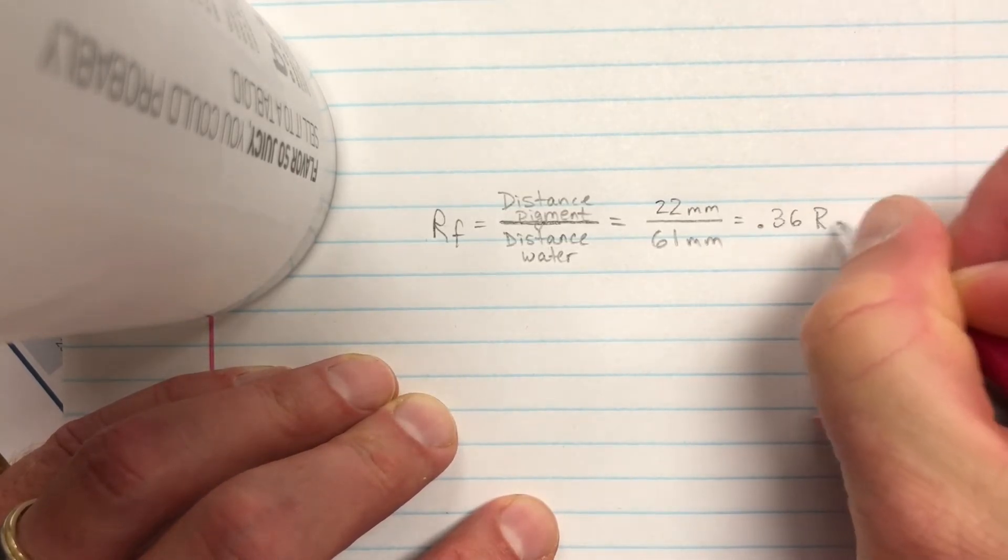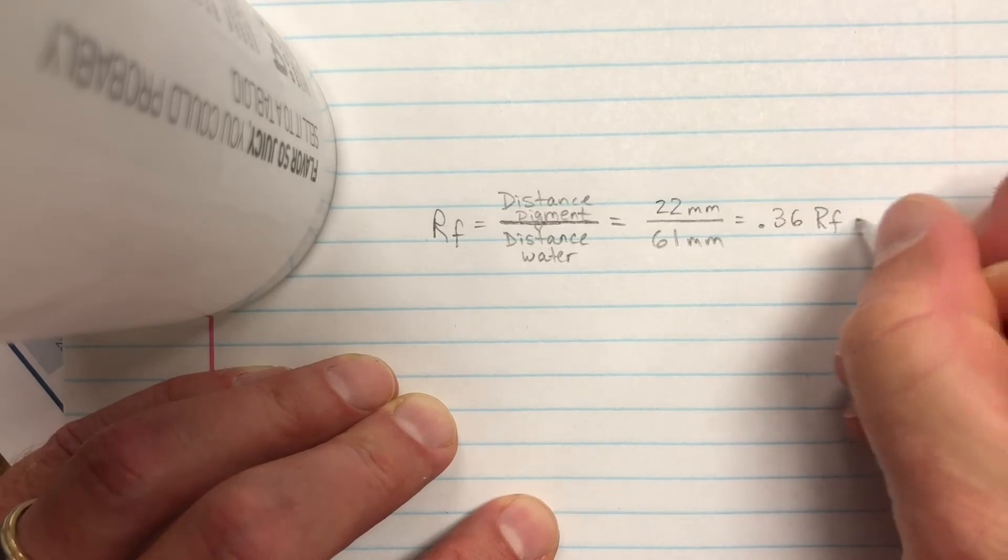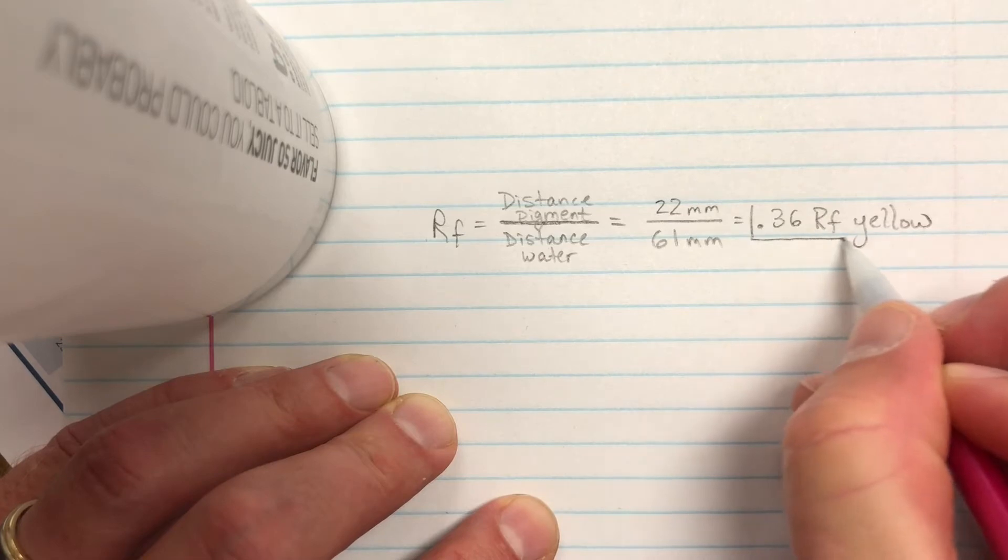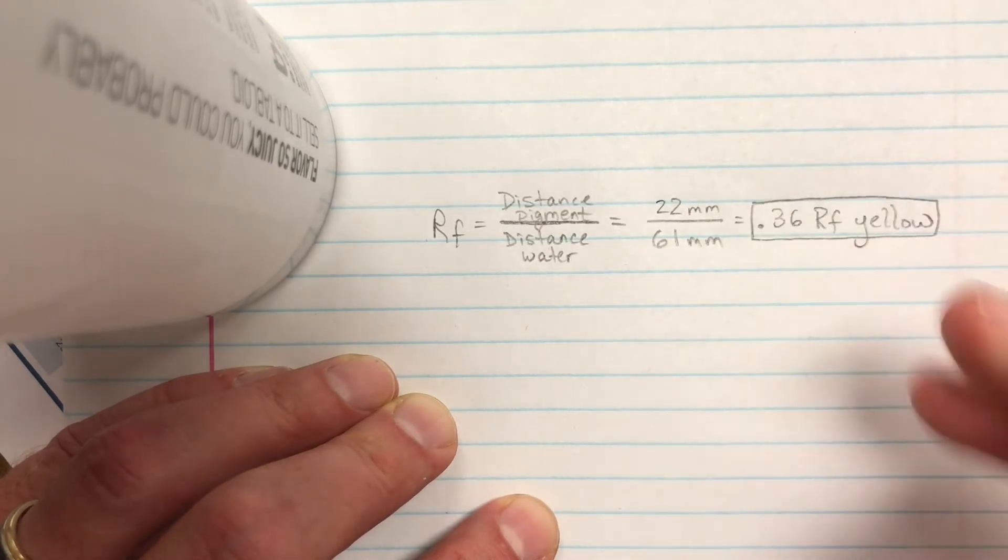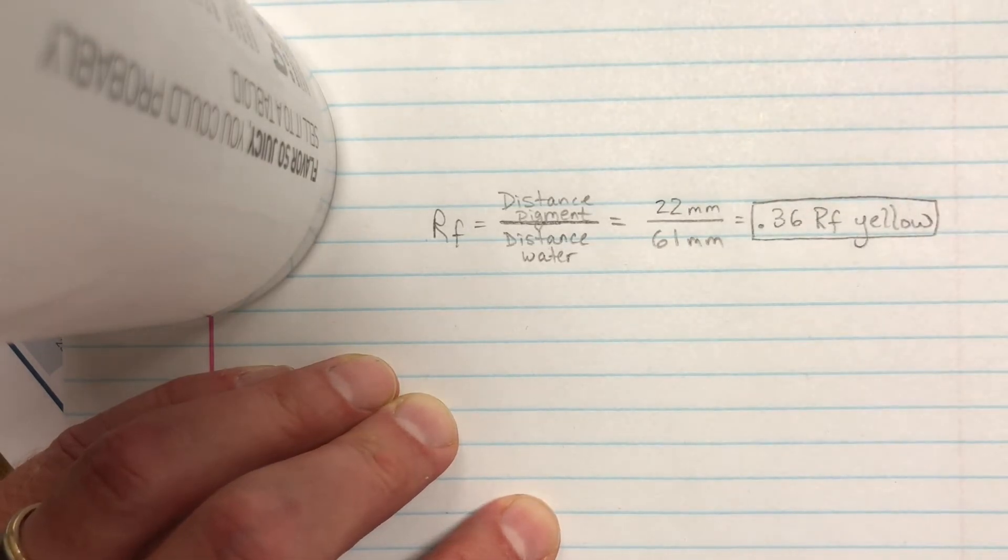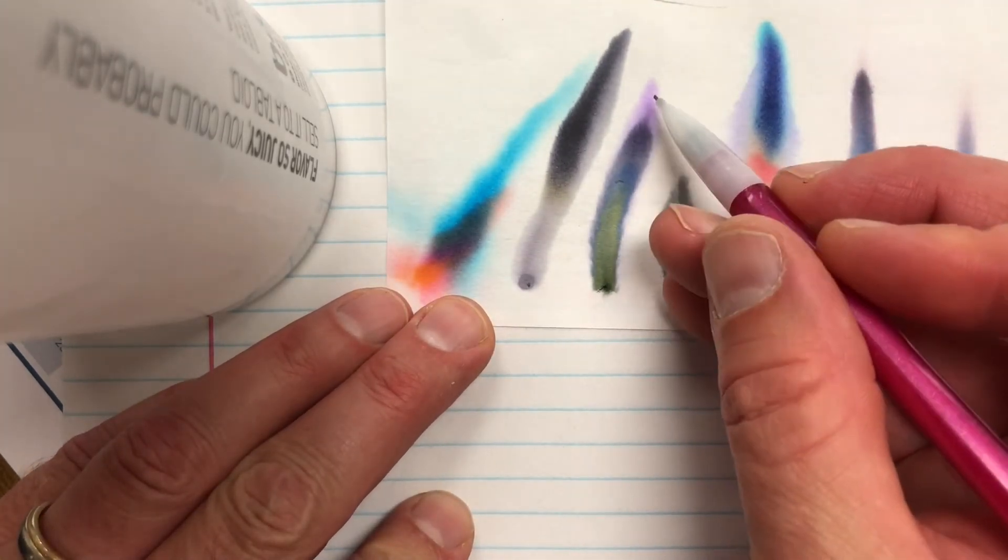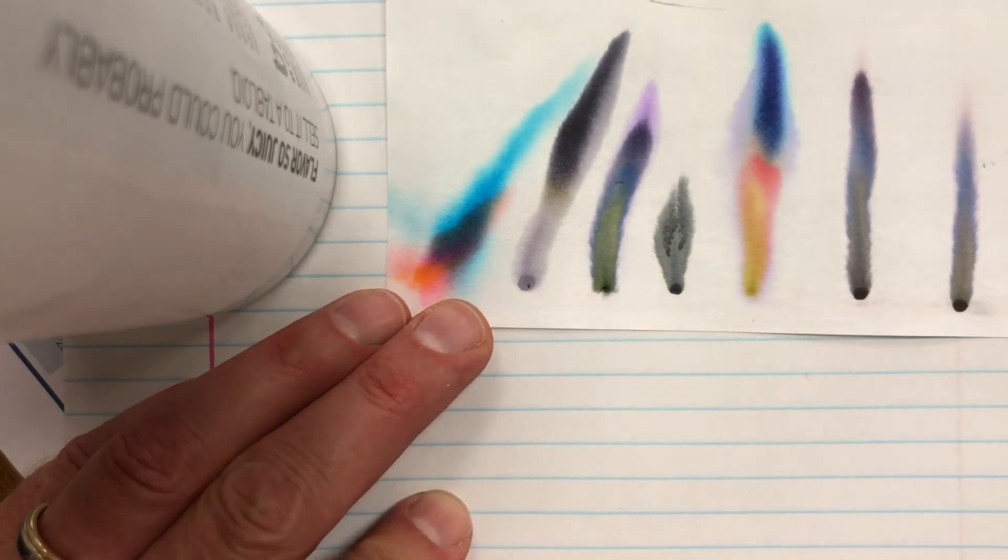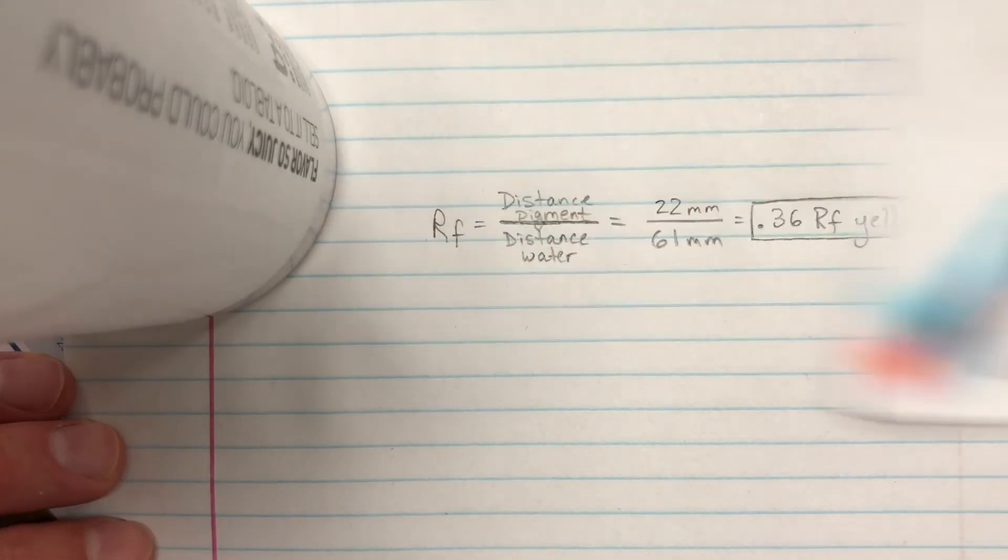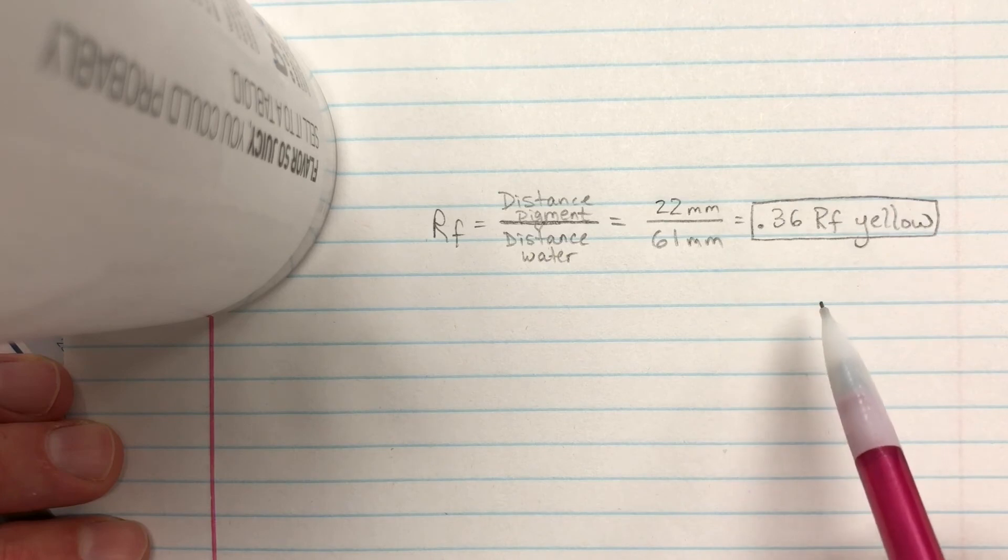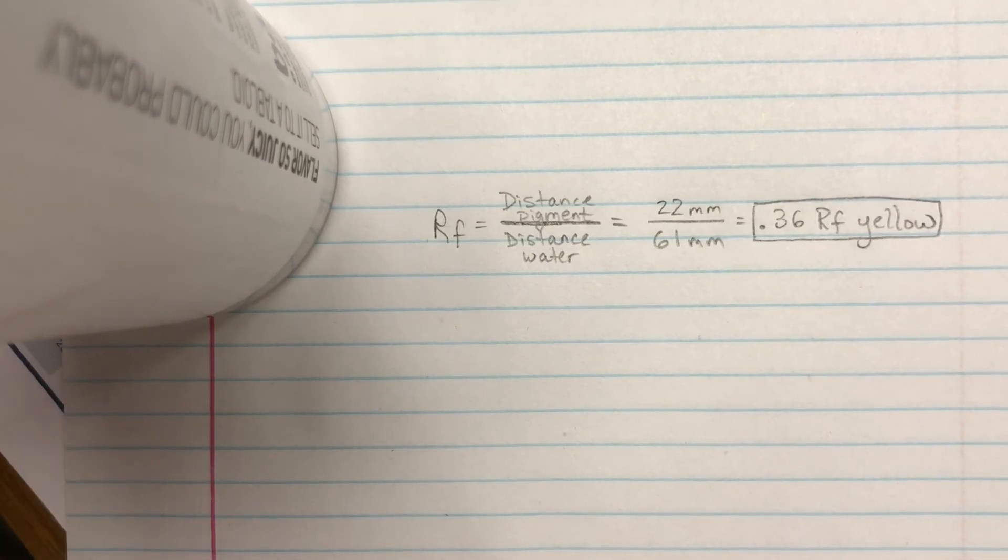And I want to do the same thing for the blue, the dark purple, and the purple, at least for this sample right here. Okay, so I hope that helps, and tomorrow I'll see you with the different color RF values that you have for the two samples that you brought home. Okay, have a great night, bye.